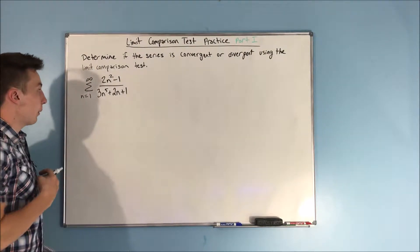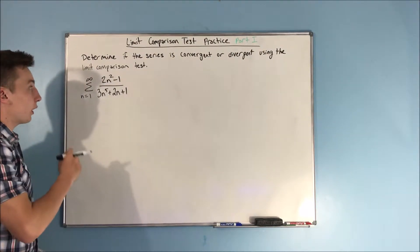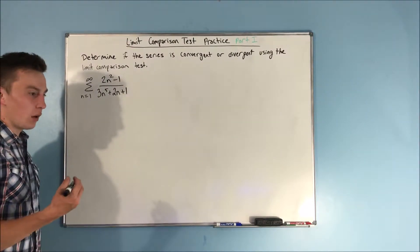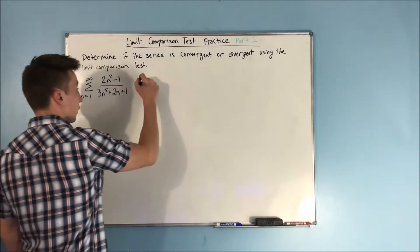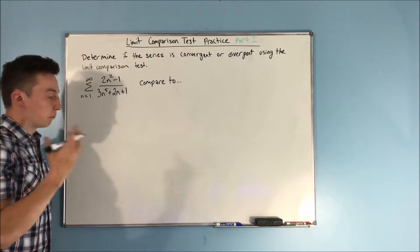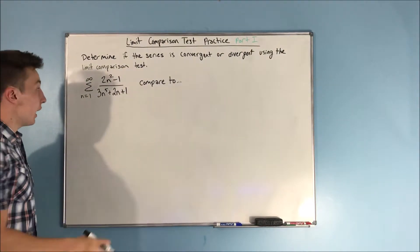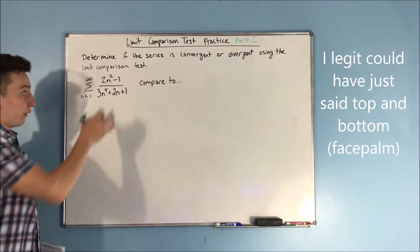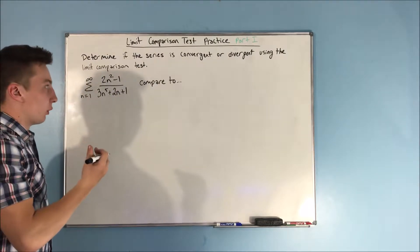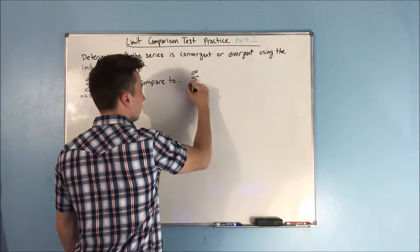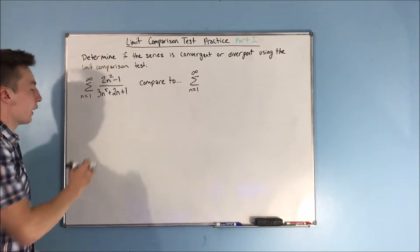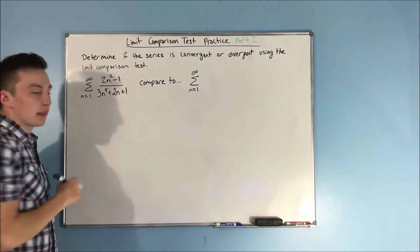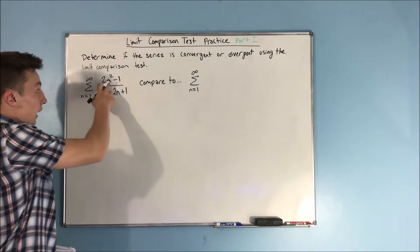Now, what about this series: the sum from n equals one to infinity of two n squared minus one over three n to the fifth plus two n plus one? The first thing we need to do is find a function to compare this to. I would take the highest powers of n in both of these — this is a binomial, this is a polynomial. If we do that, we just have n squared over n to the fifth. Let's not worry about the coefficients, forget the two n plus one and the minus one.